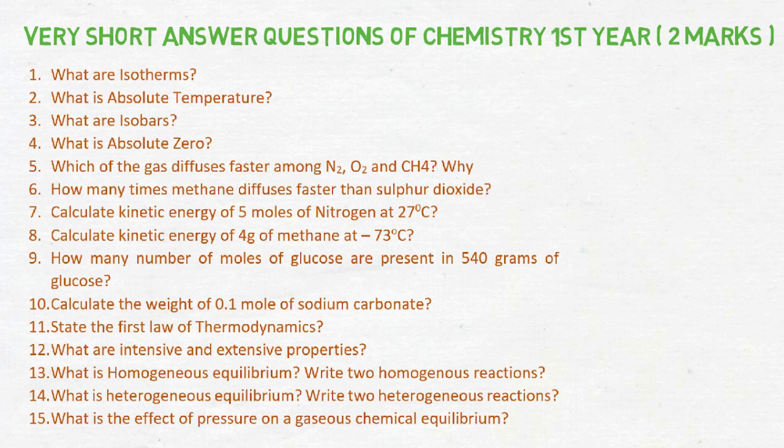First is isotherms. Absolute temperature, isobars, absolute zero, real gas, diffusion rate. Next, sixth one is methane diffuses faster than sulfur trioxide, numerical problem is also given. Questions seven, eight, nine, ten, all are numericals.